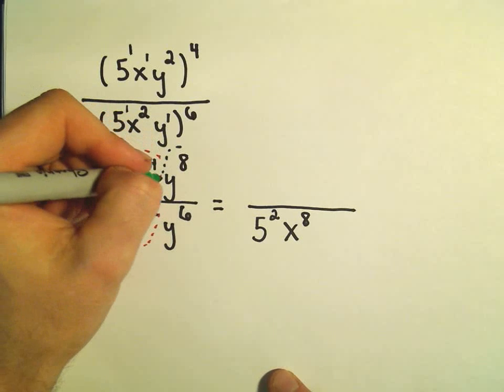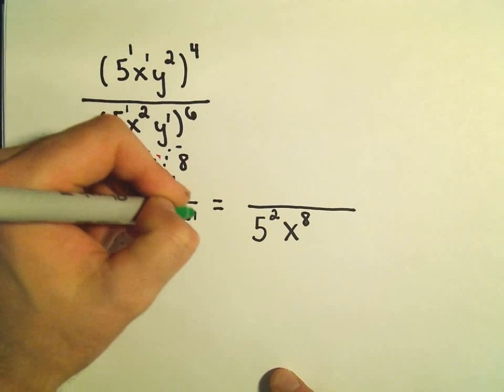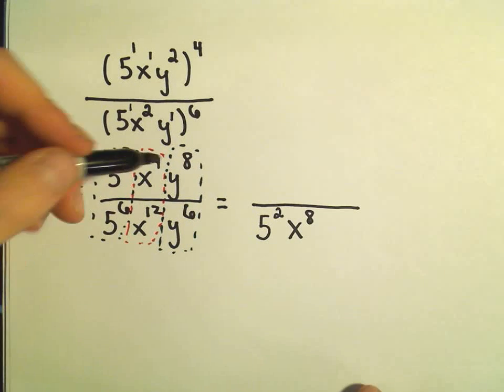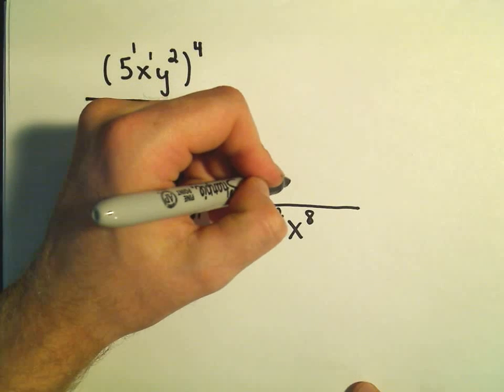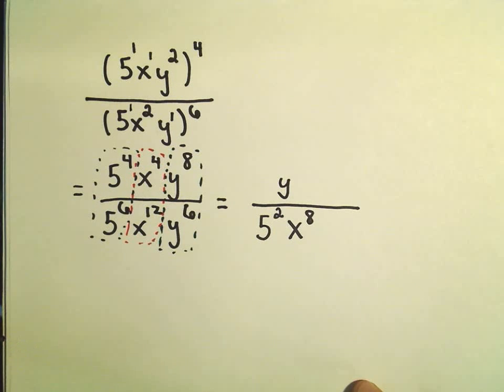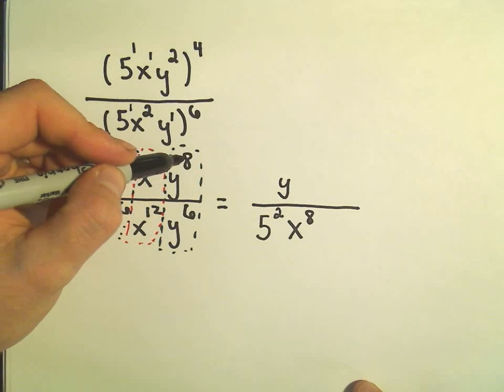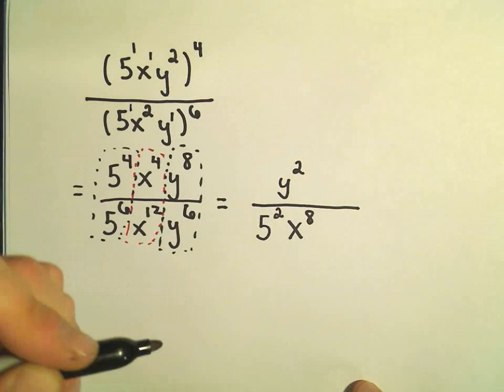And then I do the last thing with my y's. I've got the same base. y to the 8th over y to the 6th. Okay, well now the bigger exponent is in the numerator. So the y's will stay on top. And then again, I just do the same thing. 8 minus 6 will be to the 2nd power.